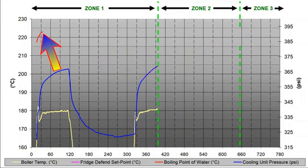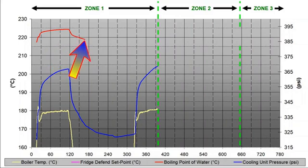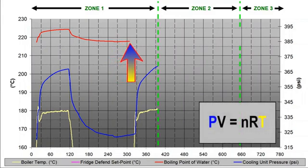Now we introduce the water boiling point curve in red. If the yellow boiler temperature curve rises until it hits the boiling point of water curve, the water within the boiler will change from liquid to steam. Damage to the cooling unit results. The refrigerator is no longer refrigerating. Your food is spoiling and the fridge is dying.